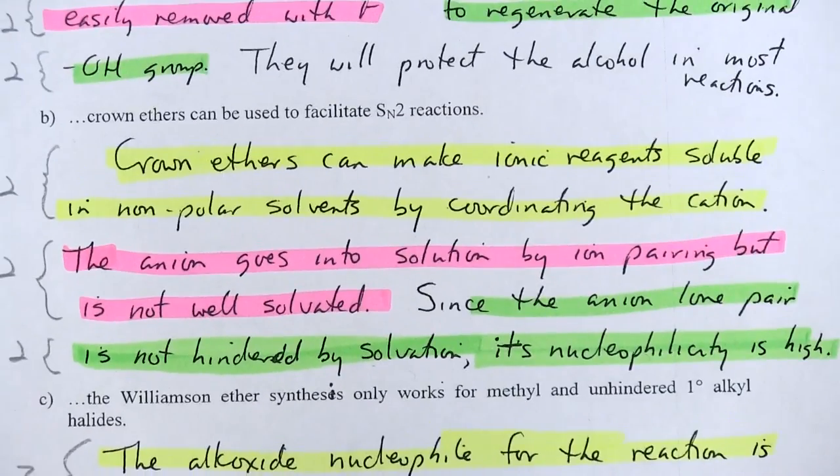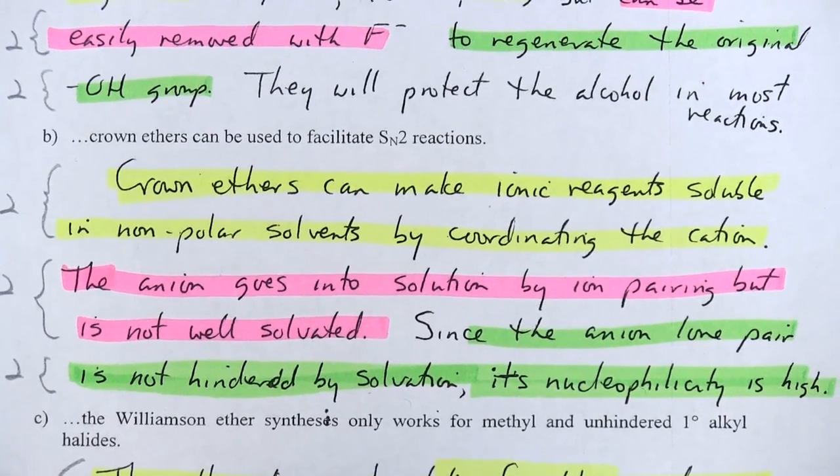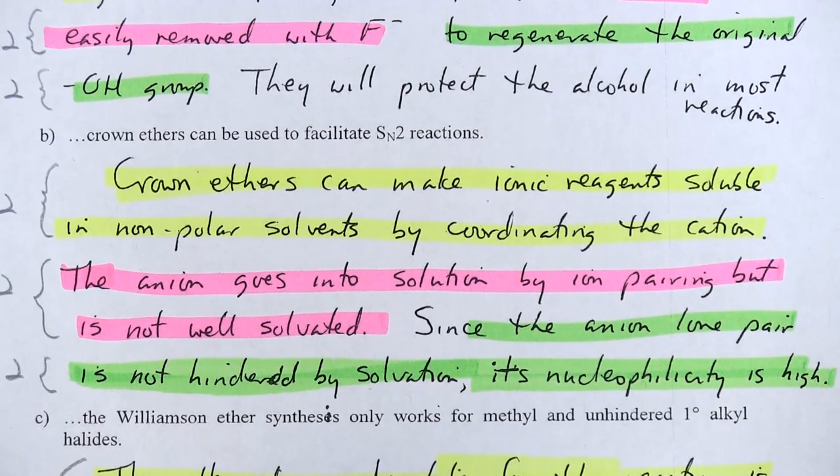If you'll remember the second question, or the second segment of Question 7, asked you to explain why crown ethers can be used to facilitate SN2 reactions. And the answer there is, crown ethers can make ionic reagents soluble in nonpolar solvents by coordinating the cation. And then the anion goes into solution by ion pairing, but is not well solvated. Since the anion lone pair is not hindered by solvation, its nucleophilicity is high.